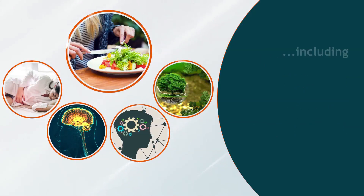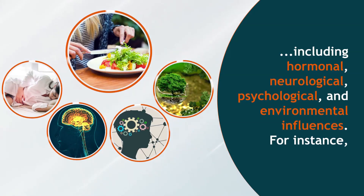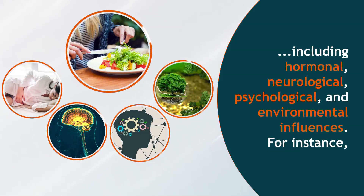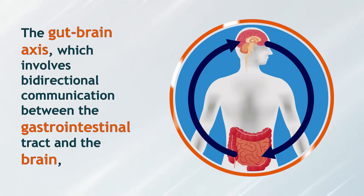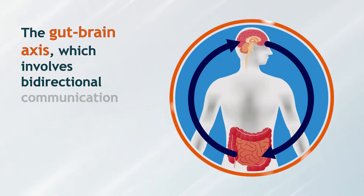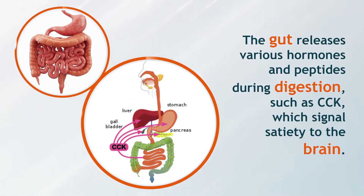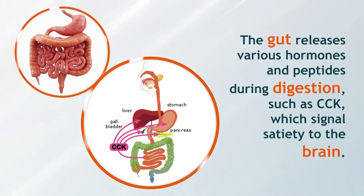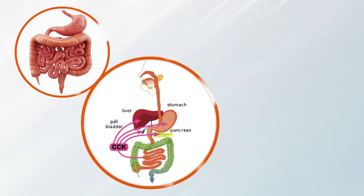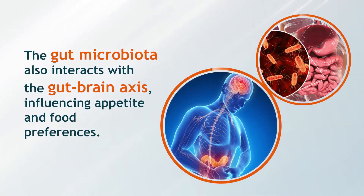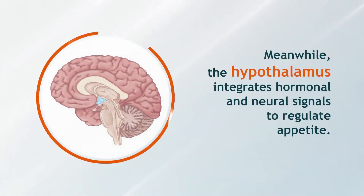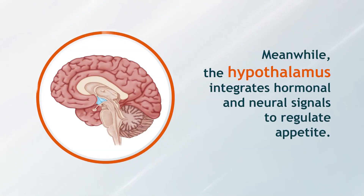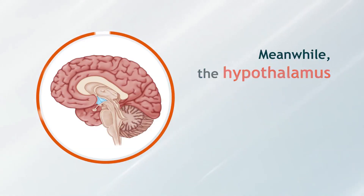Appetite regulation involves multiple factors including hormonal, neurological, psychological, and environmental influences. The gut-brain axis, which involves bidirectional communication between the gastrointestinal tract and the brain, plays a crucial role in appetite regulation. The gut releases various hormones and peptides during digestion — such as CCK, which signals satiety to the brain. The gut microbiota also interacts with the gut-brain axis, influencing appetite and food preferences.